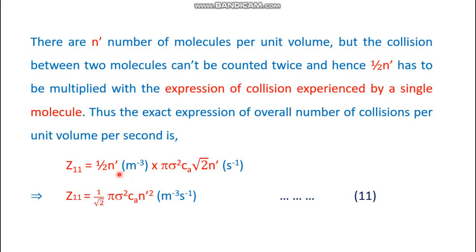The exact expression for Z11 is (1/√2) π sigma² CA n'². The unit is per meter cubed per second — that is, per unit volume per unit time. Z11 is written with a double subscript because two similar-type molecules are colliding, and this equation gives the total binary collisions per unit time per unit volume.